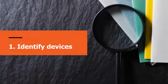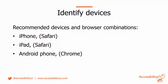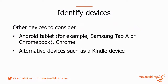Step one — identify devices. The recommended device and browser combinations we identified were iPhone with Safari, iPad with Safari, and an Android phone with Chrome. If you use a Samsung phone, do not use the Internet browser that comes pre-installed, because that's not representative of what people see on Samsung phones — use Chrome on Samsung instead, as that's much more indicative of what everyone on Android devices will see. Also definitely look at your statistics. Other things to consider are an Android tablet such as a Samsung Tab A, a Chromebook using Chrome, and alternative devices such as a Kindle if you have content going to those devices.